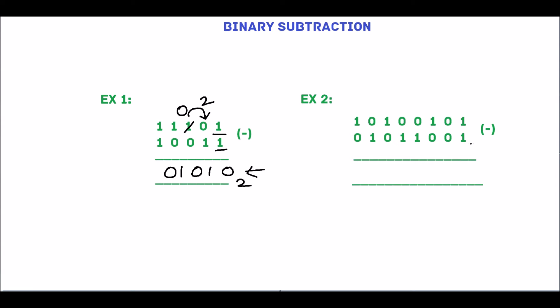Next, we will move to example 2. Start with rightmost digits, which are 1 and 1. 1 minus 1 is 0. 0 minus 0 is 0. 1 minus 0 is 1.